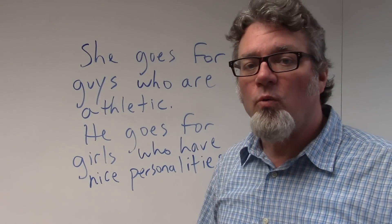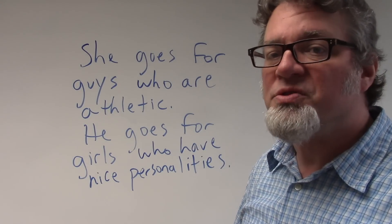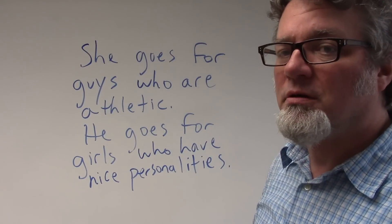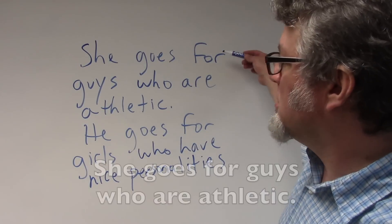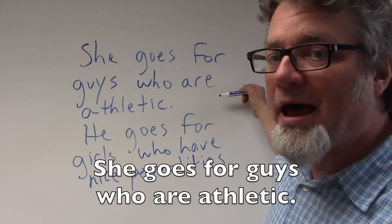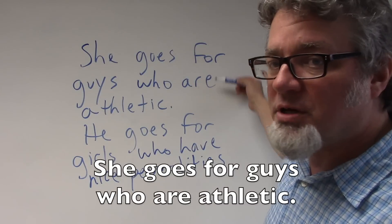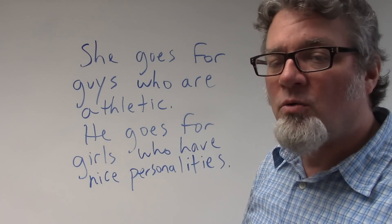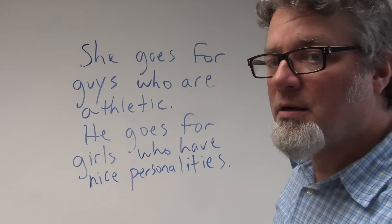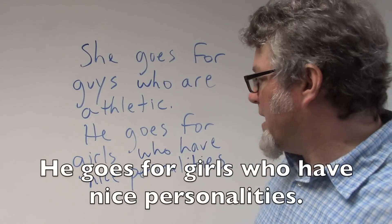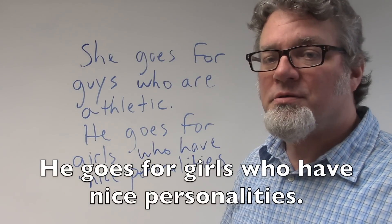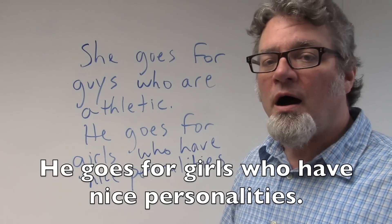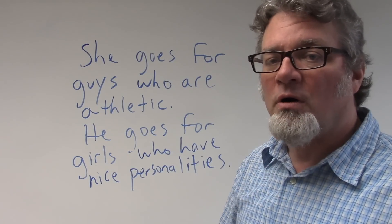You can use go for when describing a person's preference, especially in another person. For example, she goes for guys who are athletic. This means that she likes men who are into sports, or who are physically fit. He goes for girls who have nice personalities. This means that he likes women or girls who are nice, or who are pleasant.